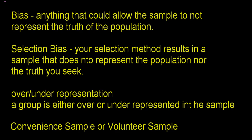The most popular form of bias is simply called selection bias. Here your selection method results in a sample that does not represent the population nor the truth you seek. So basically selection bias is this giant umbrella. Anything that can happen that results in your sample not representing the population, that's selection bias. Now oftentimes selection bias will produce what we call over or under representation, meaning a group is either over or under represented in the sample.